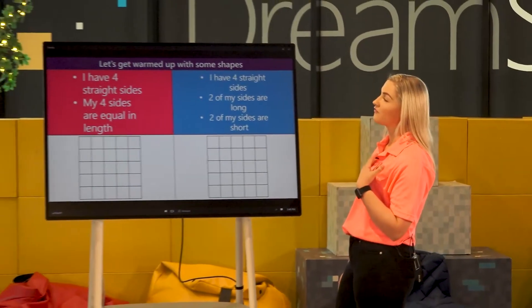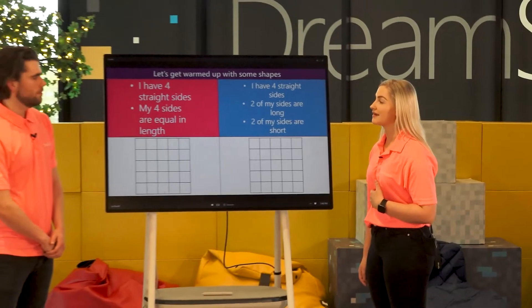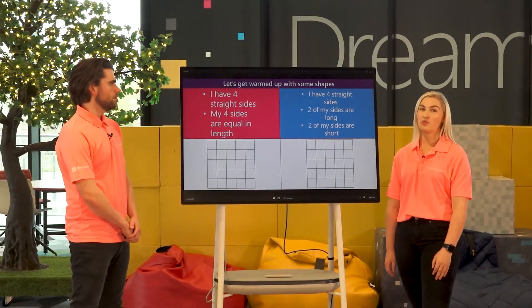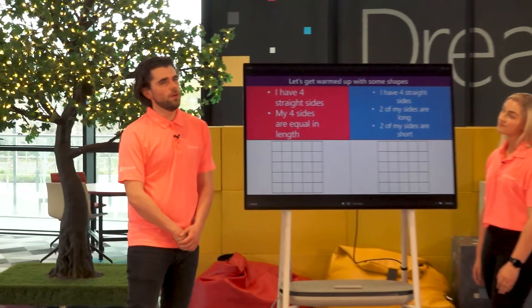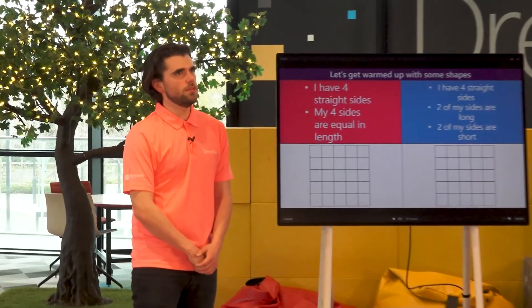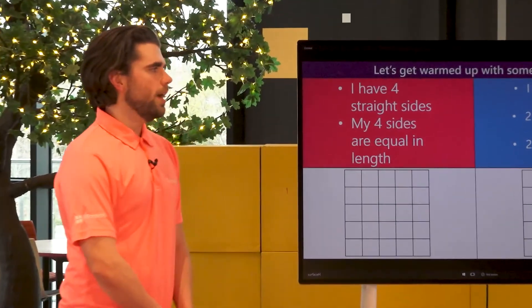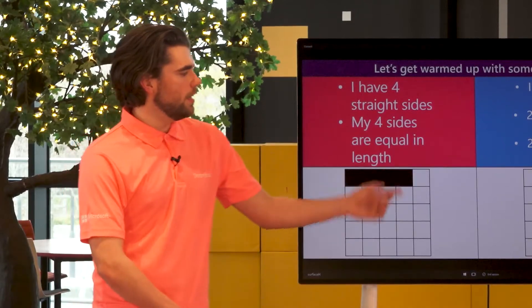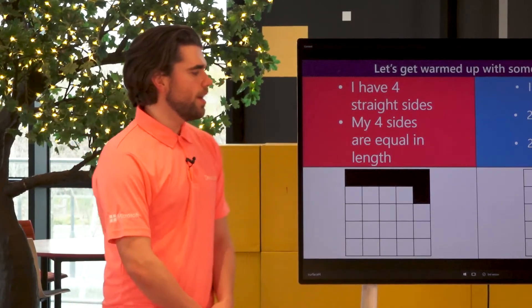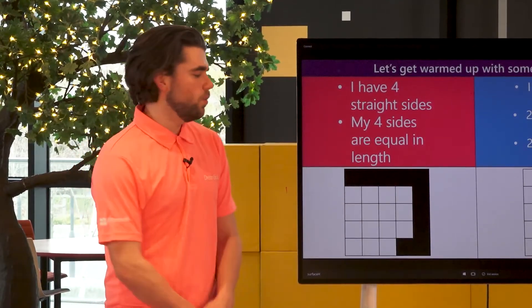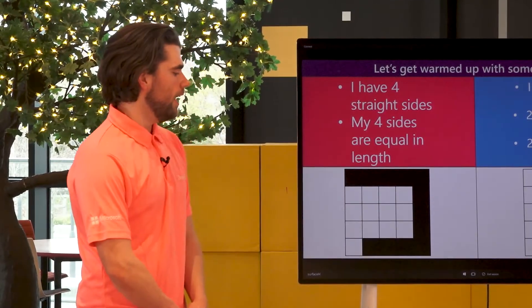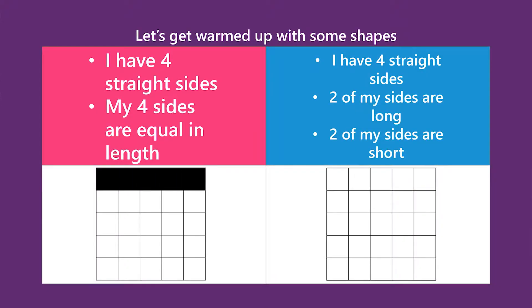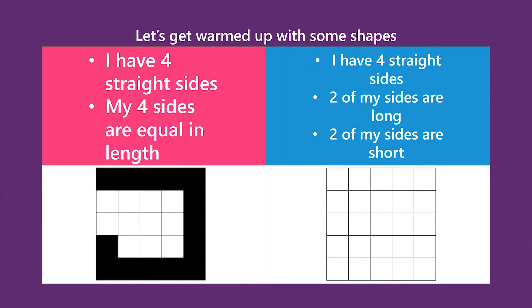Okay Michael, I have four straight sides and my four sides are equal in length. What do you think I am? Well, four equal sides — I think that might be a square. So let's see that in pixel form. As you can see, each one of these squares is being filled in with just black, the one color. And we have our four equal sides. And here it is — our pixelated square. Excellent.